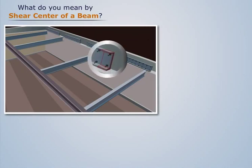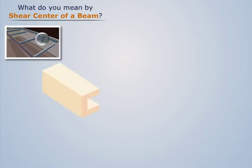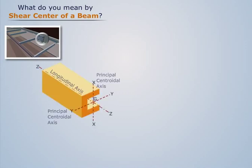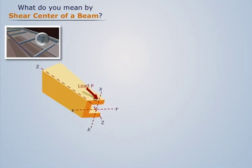Consider a channel section from the structure of a building. In unsymmetrical bending, we saw that the beam bends and gets twisted.